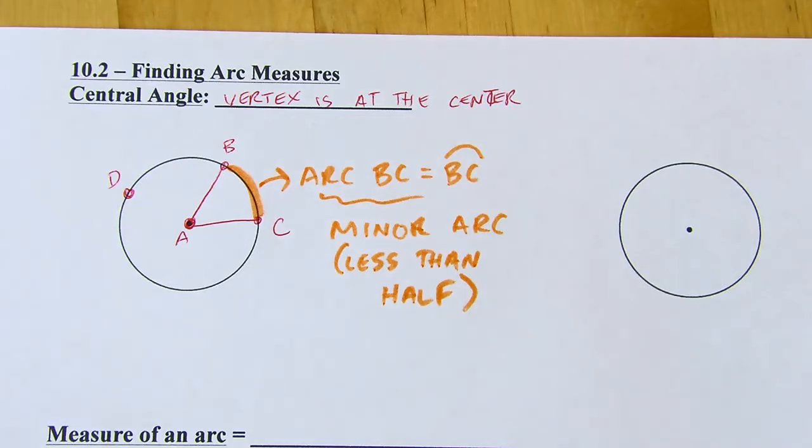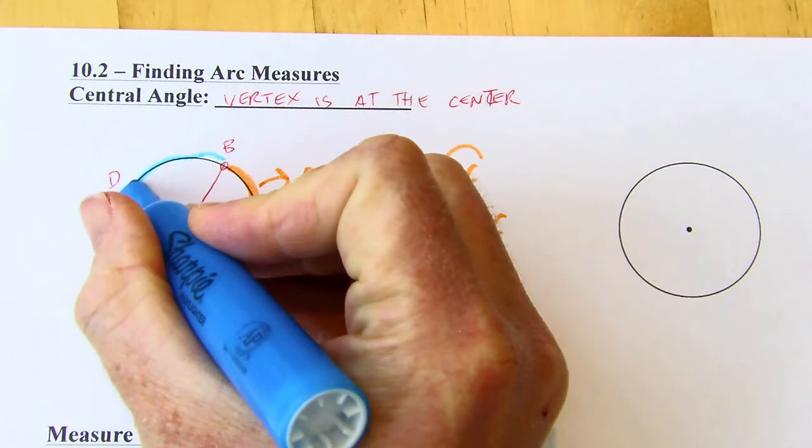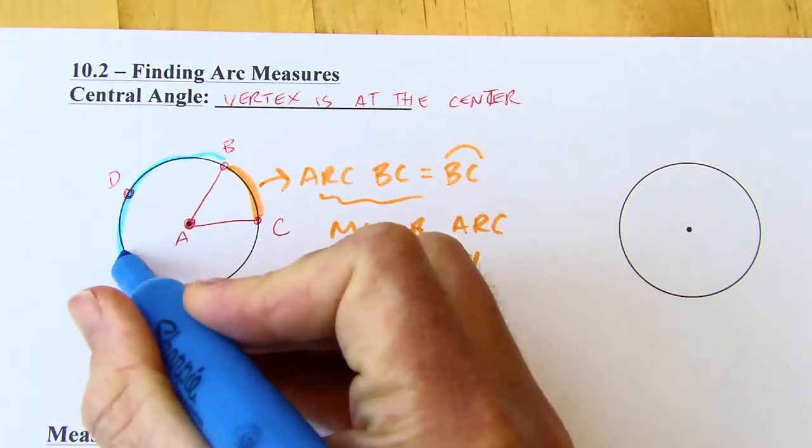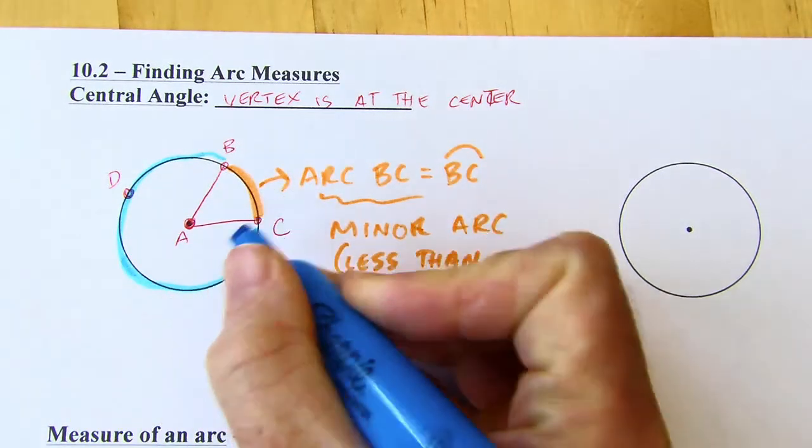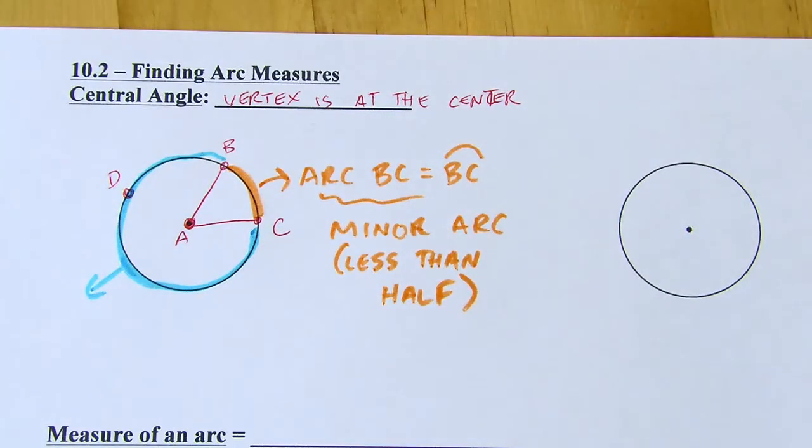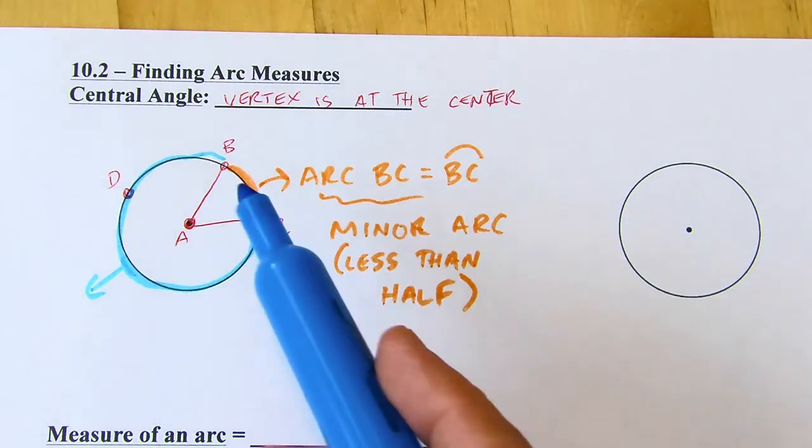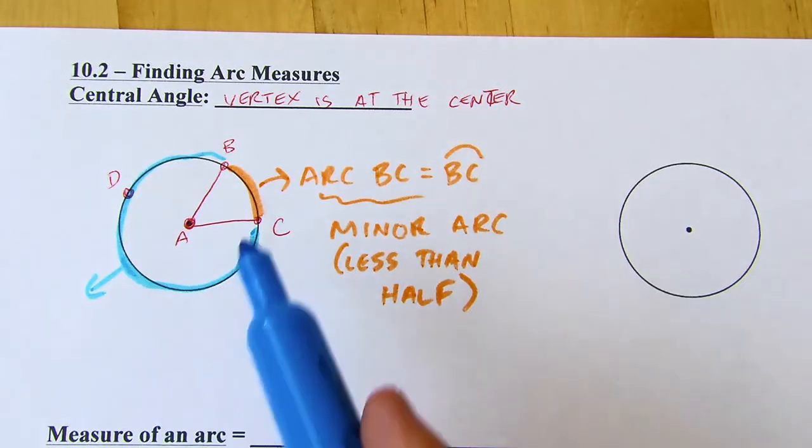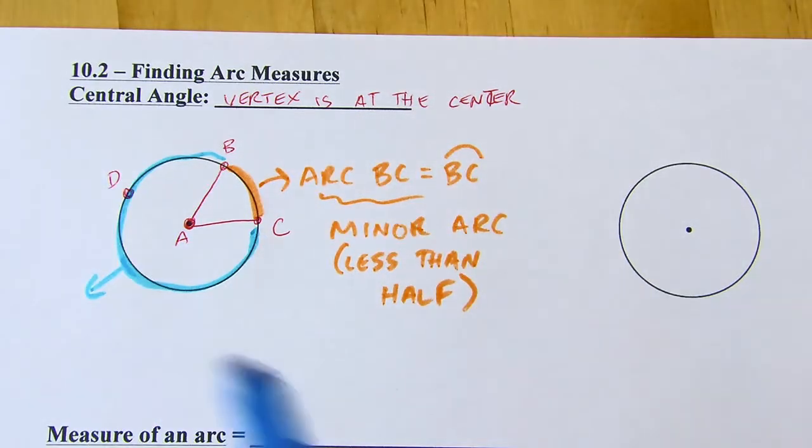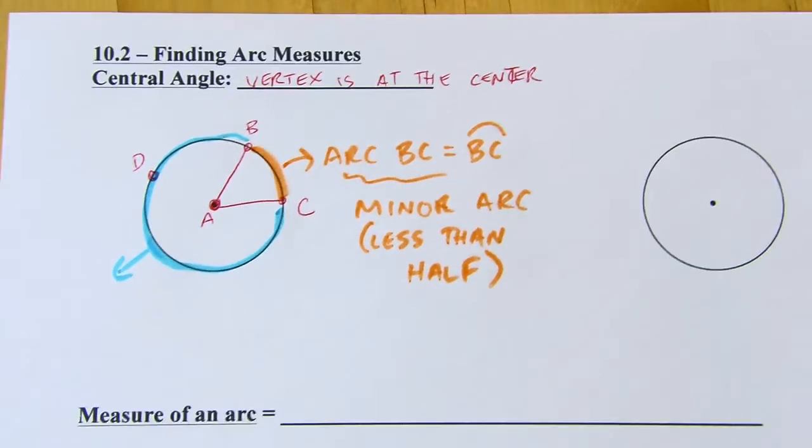The rest of the circle that I didn't highlight, I'm going to highlight in a different color now. So if I'm talking about this blue part, if I just called that arc BC, it's a little confusing. So if you say arc BC, if you just use two letters, you're usually talking about a minor arc. And if I want to talk about this is going to be a major arc, because it's going to be more than half of the circle.